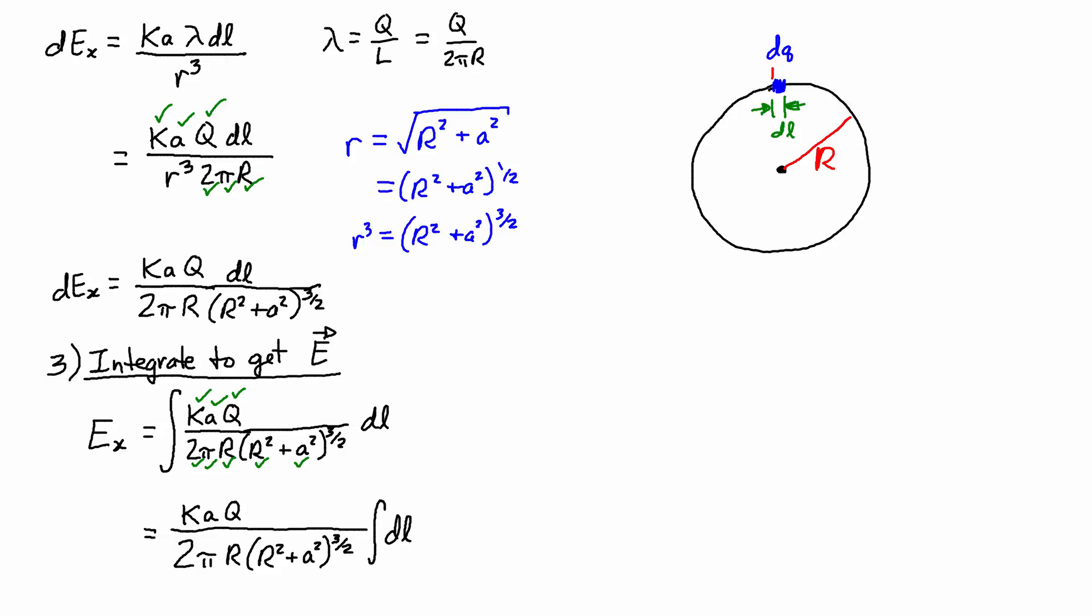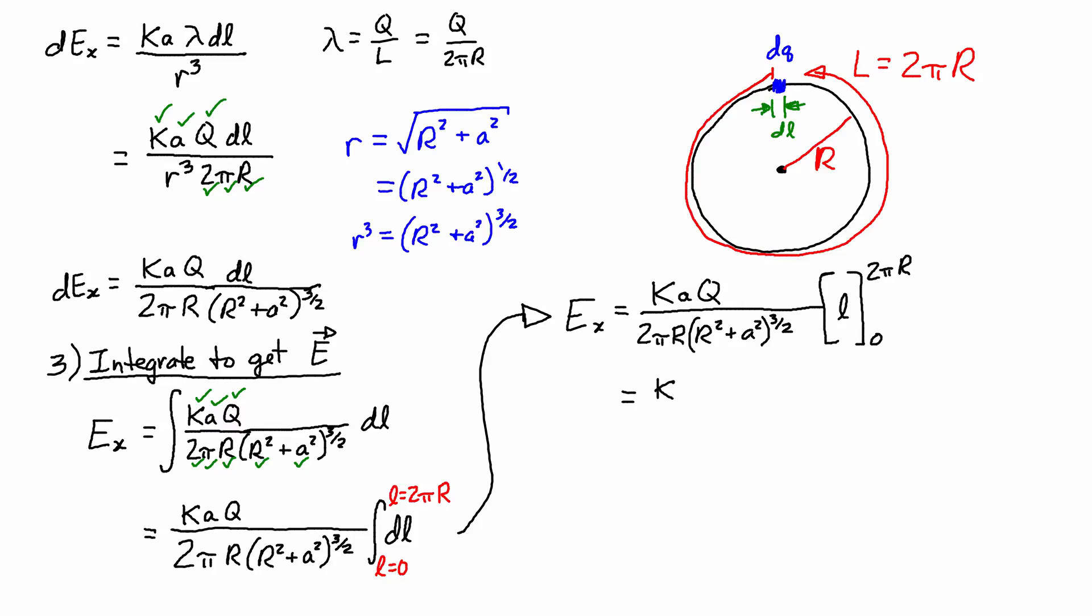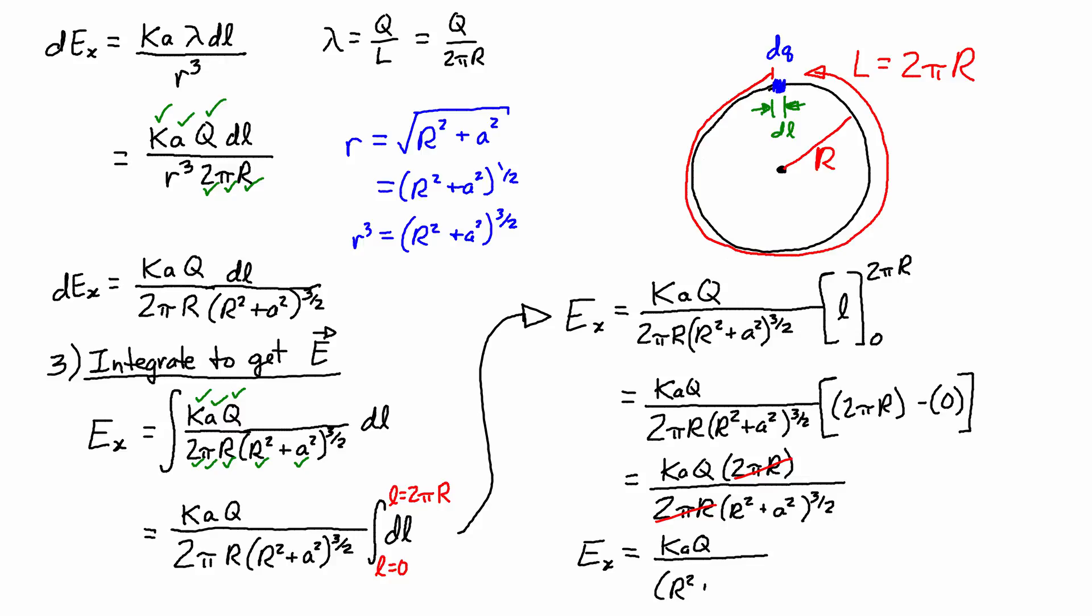So what I'm going to do is I'm going to just start at one point, and I'll say that maybe the top is the starting point. And then I integrate along the entire length, which is the circumference of the ring. So initially, the length will be 0, and the final length, capital L, is actually the circumference, which is 2 pi R. Integrating dl gives me L, and then I just need to evaluate the definite integral. And then at this point, I notice I have 2 pi R on the top and the bottom, so those are going to cancel out. And that leaves me with the final expression. So E along the x-axis is equal to kaQ divided by R squared plus a squared, all to the power of 3 over 2.